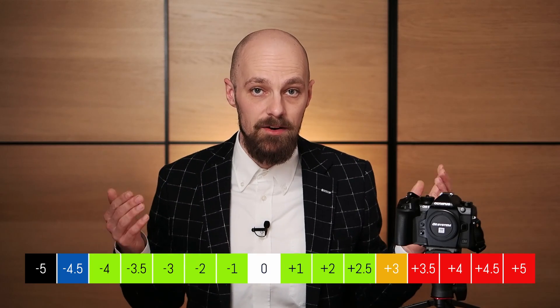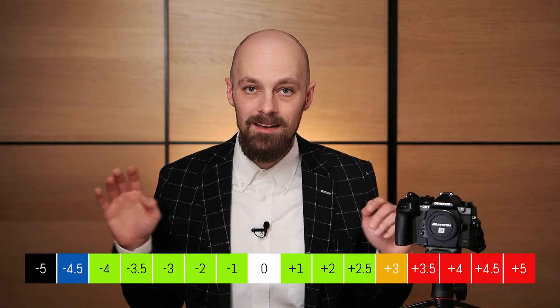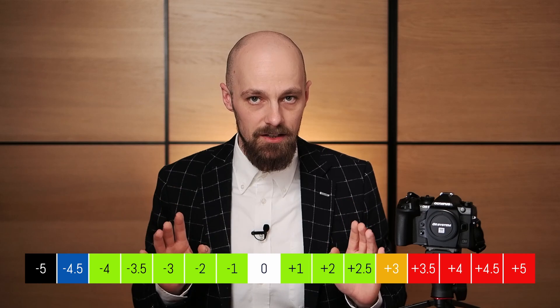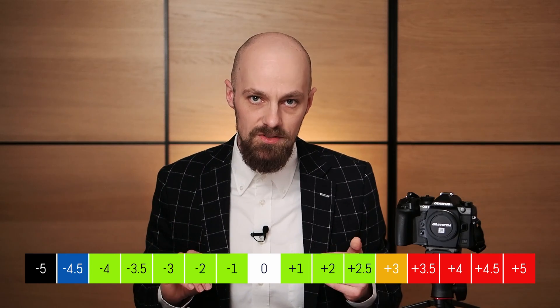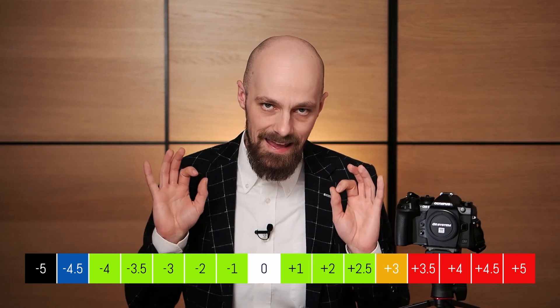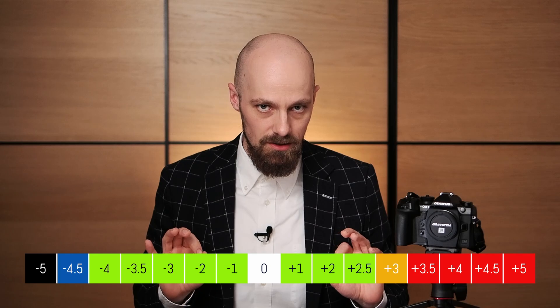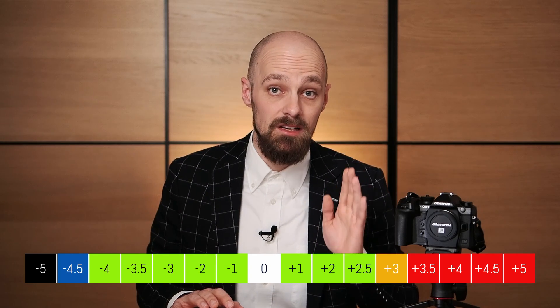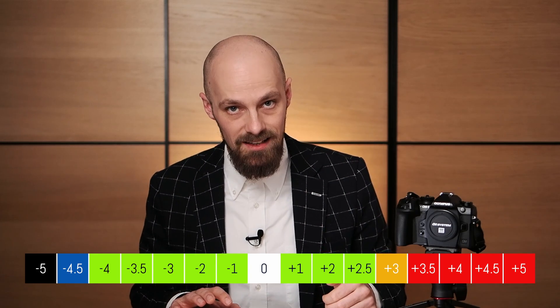As clipping can occur in both the highlights and the shadows when using Live ND, taking spot meter readings is advisable to ensure proper reproduction of critical image areas. Here is the dynamic range scale I recommend using: place shadows no lower than minus 4 EV for excellent color reproduction, and keep highlights below plus 3 EV.